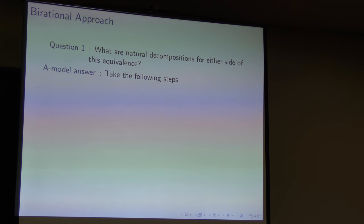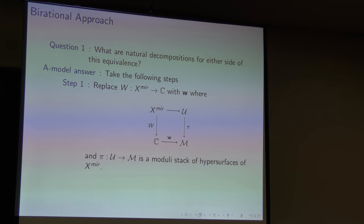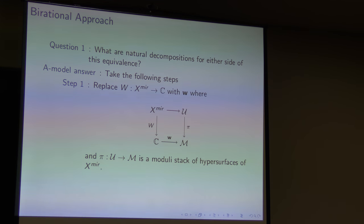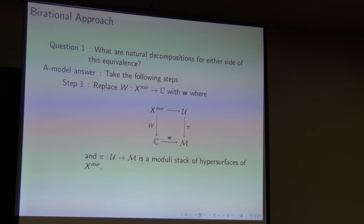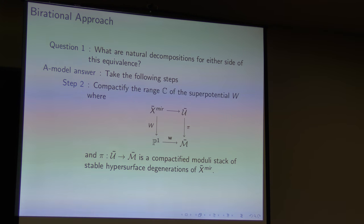What about the A-model side? This is a little more delicate. We need to take a few steps to describe the answer here. The first step is I want to replace my Lefschetz fibration W, which is some holomorphic function, just conceptually with a different function, lowercase w. Instead of thinking of this as a holomorphic function from some variety to ℂ, I'll think of this as a one-parameter family of hypersurfaces in my mirror manifold. If I'm in a good situation, I have some moduli stack of such hypersurfaces, and I can just think of this function as being pulled back from some representing function from ℂ to my moduli stack of hypersurfaces. So that's my first step: reimagining my potential as a function from ℂ to a moduli stack. The next step is I just compactify all things that I can.